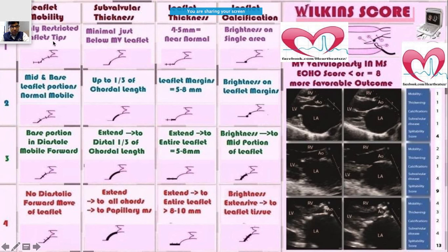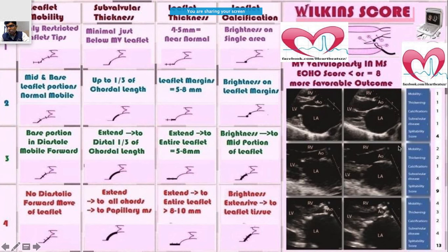You give a score of one when leaflet mobility is minimally restricted. If the mid and base leaflet portion is also involved, sometimes even in diastole the base portion is moving forward. When there is no diastolic forward movement at all, you give a score of four. Mitral valve valvuloplasty is indicated in mitral stenosis when the echo score is less than or equal to eight — a favorable outcome can then be promised for the patient.